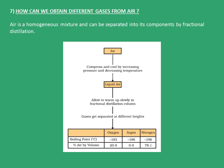The seventh one is: how can we obtain different gases from air? Air is a homogeneous mixture and can be separated into different components by the fractional distillation method. Air is compressed and cooled by increasing pressure and decreasing temperature so that it liquefies. It is then allowed to warm up slowly in the fractional distillation column. Gases get separated at different heights due to differences in the boiling points of the components present.